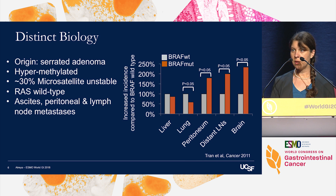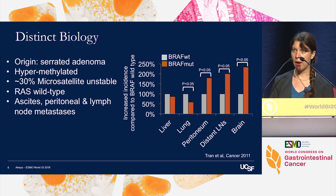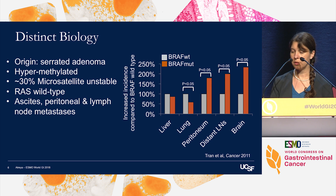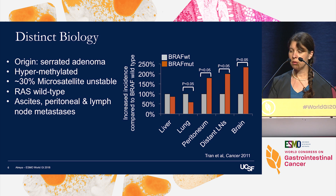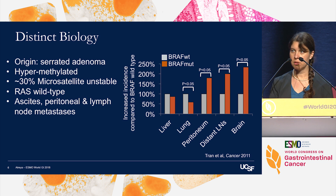Additionally, BRAF V600E-mutated tumors are often hypermethylated. About a third have microsatellite instability, and these tumors are typically RAS wild type. Regarding pattern of disease spread, oligometastatic liver and/or lung disease is uncommon, whereas ascites and peritoneal disease are very prevalent, with also an increased incidence of distant lymphadenopathy and brain metastases.